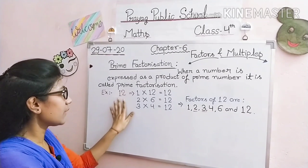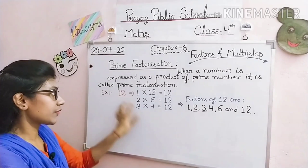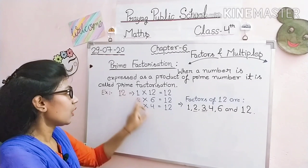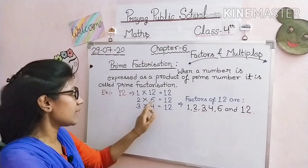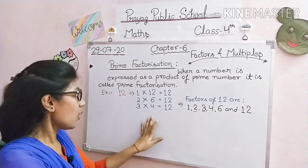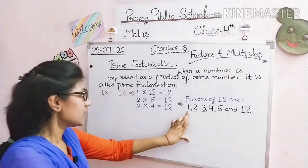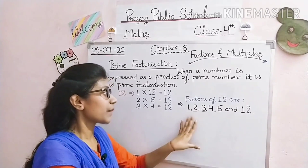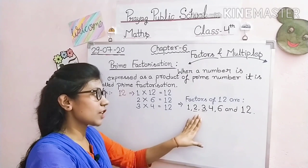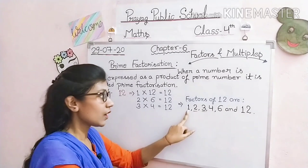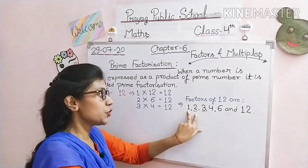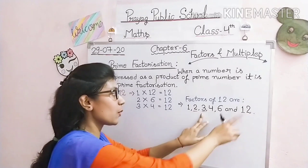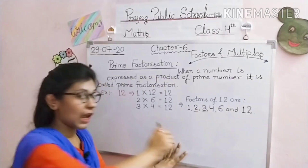अभी हम example लेते हैं — 12. 12 के factors को कैसे find out करते हैं? हम 1 से start करते हैं: 1×12=12, 2×6=12, 3×4=12. तो 12 के factors हैं: 1, 2, 3, 4, 6 और 12. इनमें prime numbers कौन से हैं? 1 is neither prime nor composite. 2 is a prime number. 3 is also a prime number. 4, 6, and 12 are composite numbers. तो 2 and 3 are prime numbers.